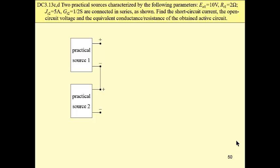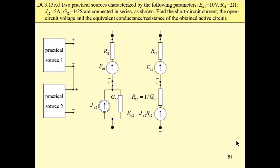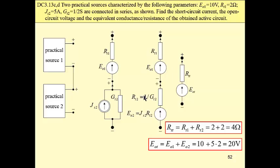Now, a series connection of identical sources. We will transform the Norton equivalent to Thevenin equivalent, then add the open-circuit voltages and resistances to obtain the Thevenin equivalent of the combination. The total resistance is the sum of resistances of individual sources, and the total open-circuit voltage is the sum of open-circuit voltages of individual sources.